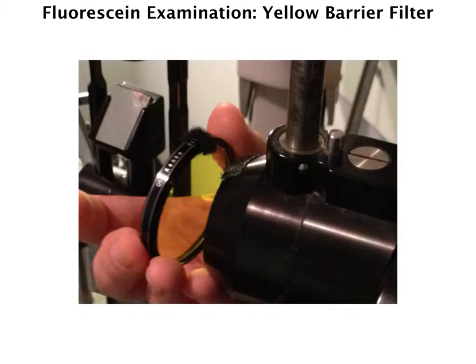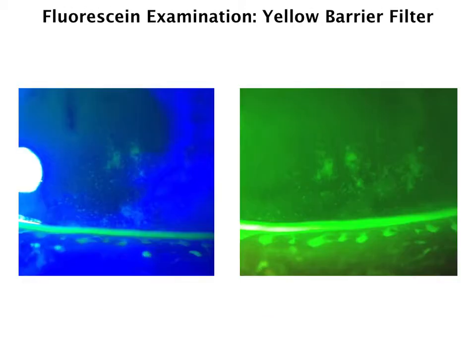Another secret to good fluorescein examination is using a yellow barrier filter. These are available from camera stores — it's a Wratten 12 filter. Let me show you why these are useful, not only for examination, but especially for photography. If we look at the picture on the left-hand side first, this is just using a full-field cobalt blue light. You can see that there are two large areas of superficial punctate keratitis, SPKs, surrounded by more diffuse, subtle SPKs.